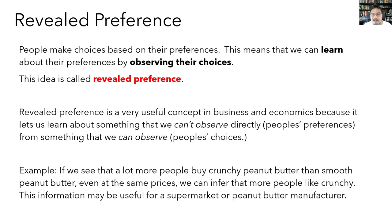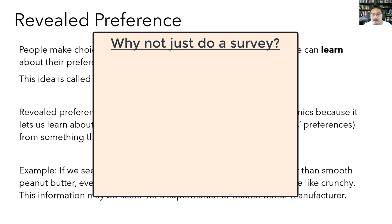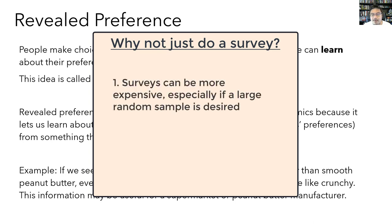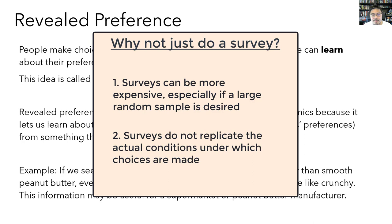Why not just conduct a survey and ask people directly what they prefer? Surveys have uses, but also downsides. First, conducting a survey with a large sample size can be quite expensive — it might be more cost-effective to look at historical sales data for millions of customers. Second, it can be difficult to replicate the actual conditions under which real choices are made. Survey respondents aren't putting any money on the line and aren't faced with the same choices they'd see on a supermarket shelf. So oftentimes it's more effective to learn about people's preferences by looking at their actual choices.